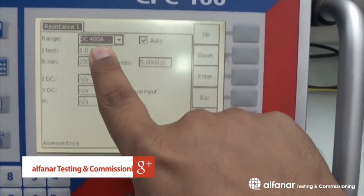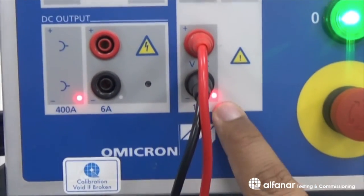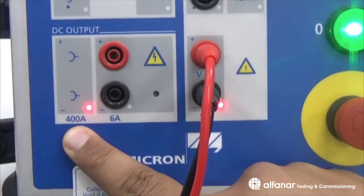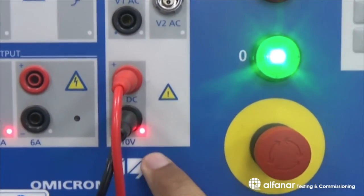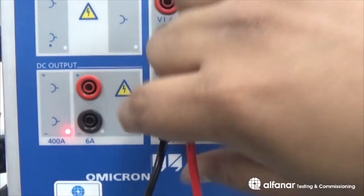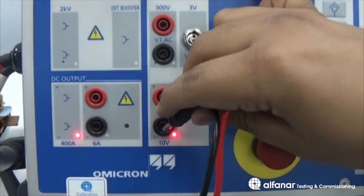I will choose this value. It will show me here the terminals from where I have to inject the current and measure the voltage. As we said, the 400A DC output from the side of the CBC, and the voltmeter which will measure the voltage drop across the resistance VDC 10V.